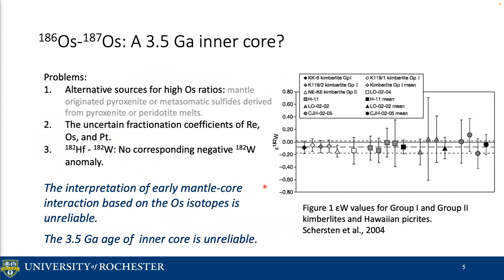Later studies find that the coupled high osmium isotopic ratios are not exclusive to the outer core. Some mantle-originated peridotites or metasomatic sulfides derived from peridotite amounts can also offer such an isotopic ratio. Also, the fractionation coefficients used in those studies are from relatively low temperature and low pressure conditions, so those coefficients might be really different from those in the core. Furthermore, the tungsten isotopic studies in the same rock are against the idea of an outer core source, because those rocks do not have a corresponding negative tungsten-182 anomaly. So the interpretation of early mantle-core interaction based on osmium isotopic ratios from plume-related rocks is unreliable, and the 3.5 Ga inner core age is also unreliable.